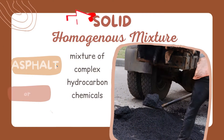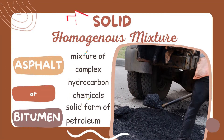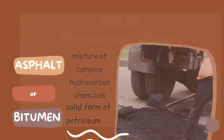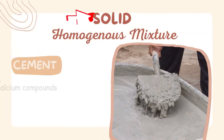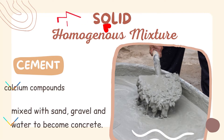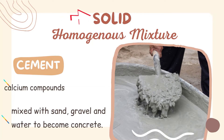Now let us have this one by one. The first example for solid homogeneous is asphalt, or bitumen, or asfalto in Tagalog. This is a mixture of complex hydrocarbon chemicals and the solid form of petroleum. Another example is cement, which is composed of calcium compounds. It is mixed with sand, gravel, and water to become concrete. Have you seen this? I'm sure you have.